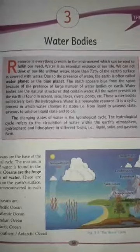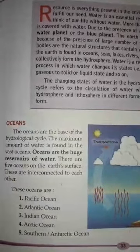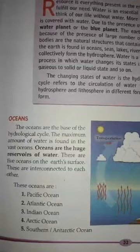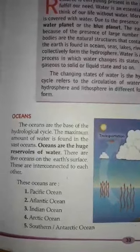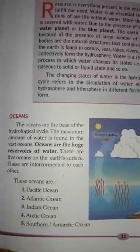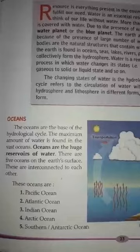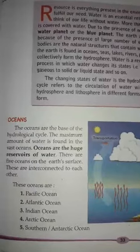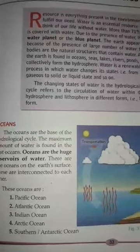Now I am going to teach you about the oceans. The oceans are the base of the hydrological cycle. Generally we speak of the oceans as if they are separate bodies of water, but in reality they are just sections of one great sea covering most of the earth's surface. The major oceans of the world are the Pacific Ocean, Atlantic Ocean, Indian Ocean, Arctic Ocean, and Southern Ocean.